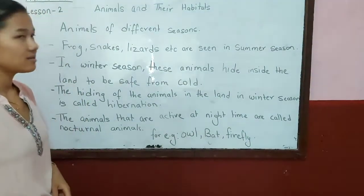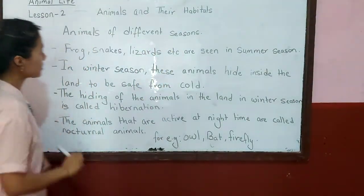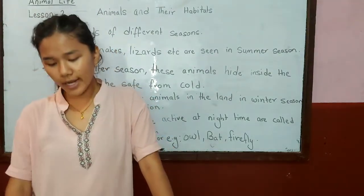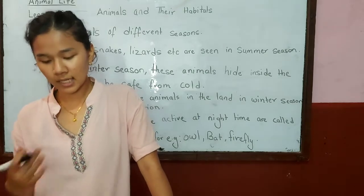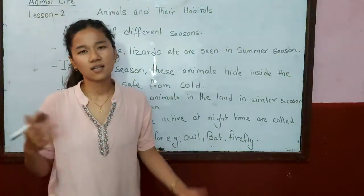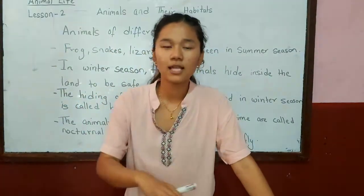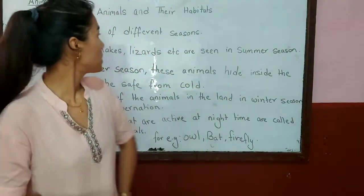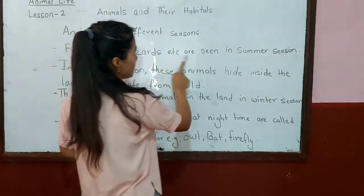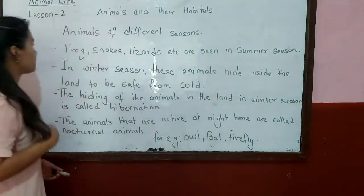Students, at last you can see animals of different seasons. We can see all animals of our surroundings in all seasons. We can see some animals only in summer, and some animals appear only in rainy season. Frogs, snakes, lizards etc. are seen in summer season.